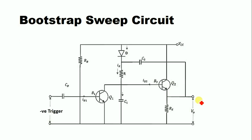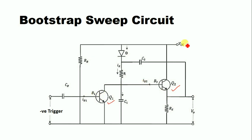In this circuit, we have two transistors: transistor Q1 and transistor Q2. Transistor Q1 acts like a switch and transistor Q2 acts like an emitter follower. The base of transistor Q1 is connected to VCC via the resistance RB.